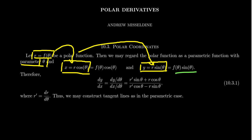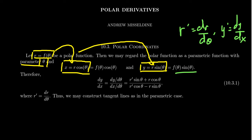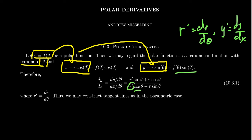Taking the derivative of y with respect to theta first using the product rule — r prime will always mean dr over d theta — you get the derivative of r times sine theta, plus r times the derivative of sine theta, which is cosine. Taking the derivative of x with respect to theta, you get r prime cosine, and then negative r times sine theta, since the derivative of cosine is negative sine. This gives us the formula for dy over dx. What you really want to know are the yellow boxes: x equals r cosine theta, y equals r sine theta, and since r is a function of theta, you take the derivative with respect to theta on top and bottom.